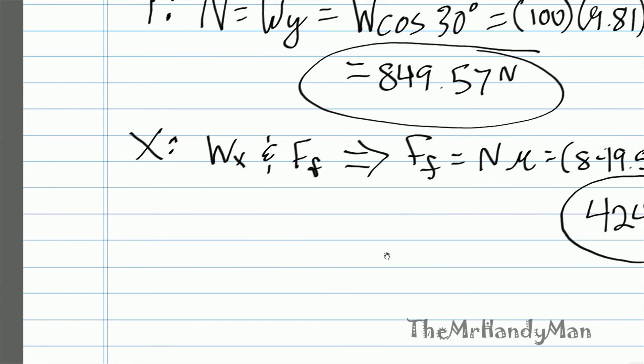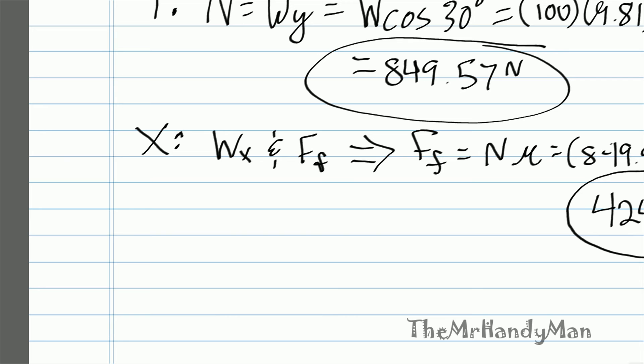The other portion is going to be due to gravity and it being on an incline. So, I'm going to do that in this next part in orange, and it's really simple. Wx is equal to w sin of 30 degrees, which is fairly simple to work out, 100 times 9.81 times sin 30, which when you solve for all that, that equals 490.5 newtons. And there's our second portion.